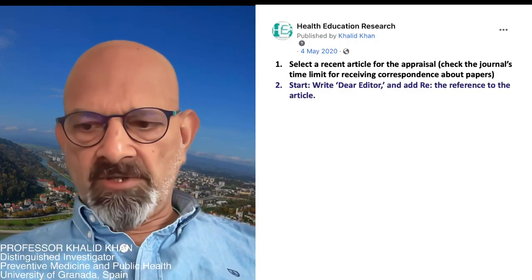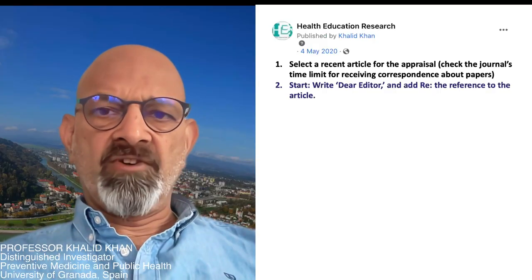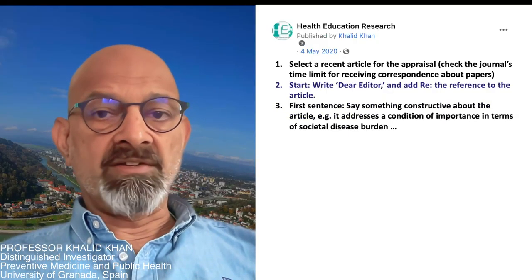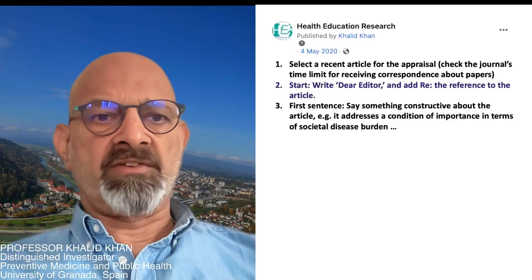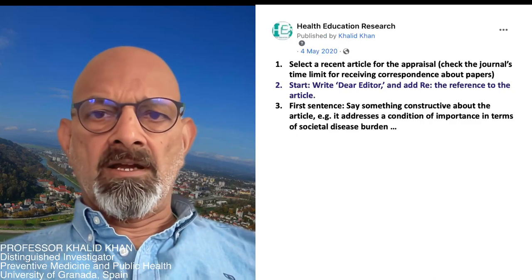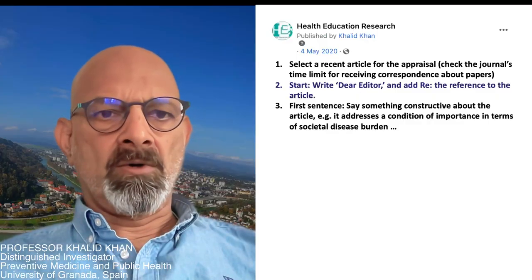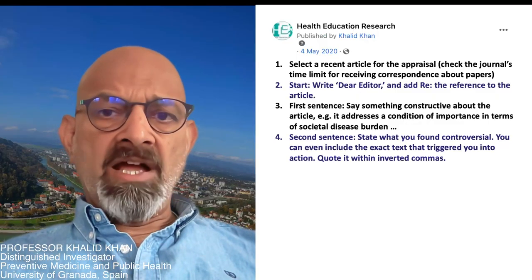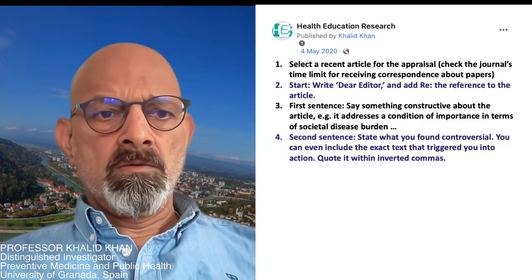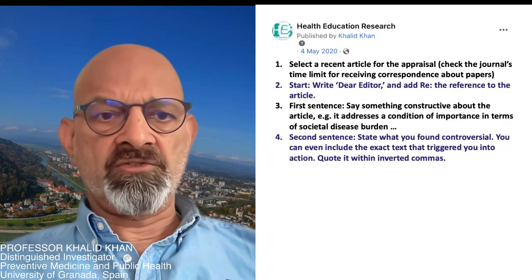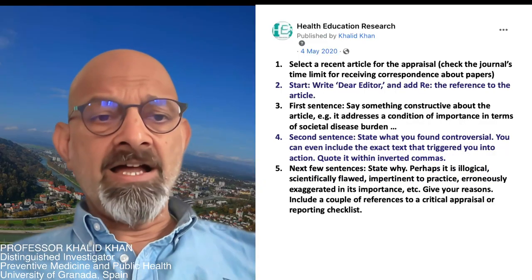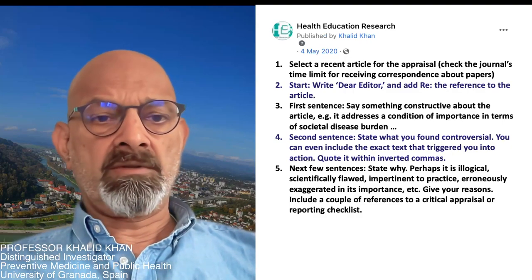You are going to start by, in simple terms, addressing the editor and referring to the article about which you are going to make a comment. The initial sentence or sentences should say something positive — for example, you could comment on the burden of disease covered in the paper in terms of its importance. You then directly comment on the aspect of the paper that you found controversial or that triggered you to write the letter. You might even take that text from the original article and put it in inverted commas, then go on to explain why this aspect has some problem.